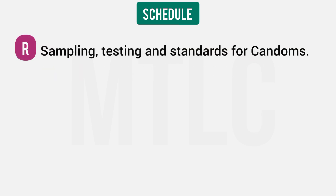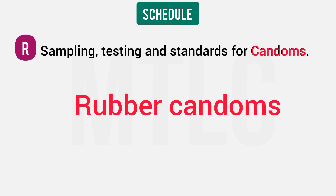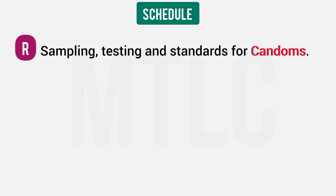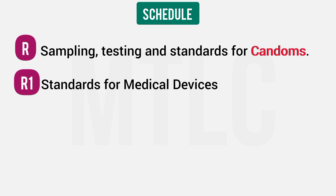Schedule R — R for Rubber — covers condoms, which are made of rubber. It specifies sampling, testing, and standards for condoms. Schedule R1 covers standards for medical devices.